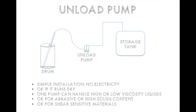A common way diaphragm pumps are used in manufacturing is as an unload pump. If a chemical is coming in a drum or tote, you insert a wand — basically a metal pipe — attached to a flexible hose going to the unload pump, which is hard piped to the storage tank. This installation is extremely simple. There's no electricity involved; these are typically air-actuated. It's okay if it runs dry as the drum empties, one pump can handle high or low viscosity liquids, and it's fine for abrasive or high solids content. It's also suitable for shear-sensitive materials, as there's not a lot of turbulence compared to a centrifugal pump.